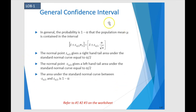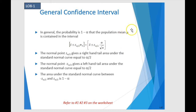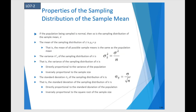Here's the formula. In general, the probability is 1 minus alpha that the population mean mu is contained in the interval. The interval is x-bar plus or minus z sub alpha over 2 times sigma of the sample mean. We further expand that formula: x-bar plus or minus z of alpha over 2 times sigma divided by the square root of n. The only difference is that sigma divided by the square root of n is sigma x-bar expanded — sigma x-bar is sigma over the square root of n.